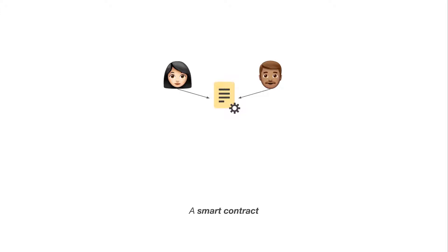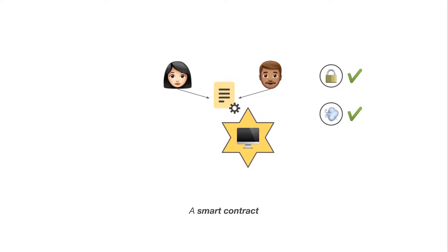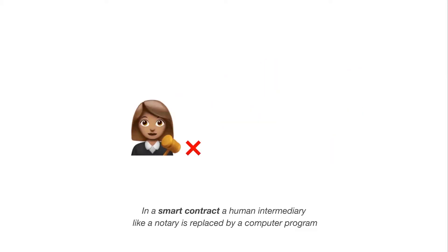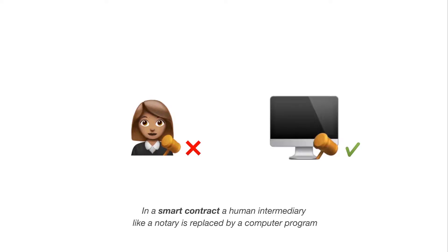Traditional contracts are enforced by law, while smart contracts are enforced by code. This makes it a self-executing contract. Because there is no intermediary, smart contracts aim to provide more security, to be faster and less expensive than traditional contracts. Instead of trusting the law, you trust computer code.